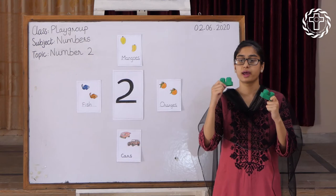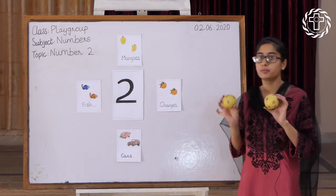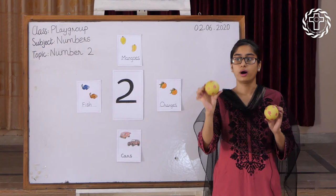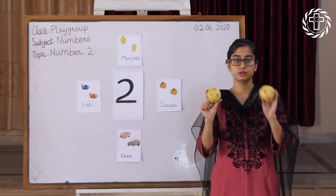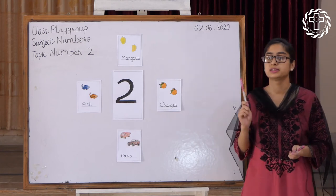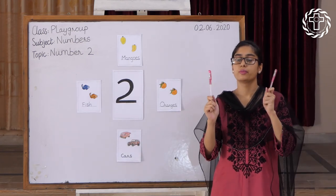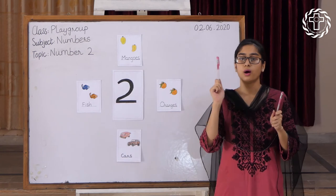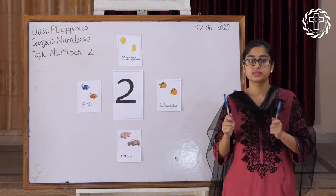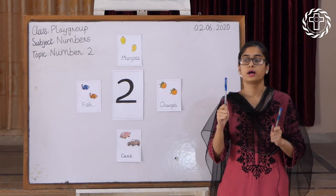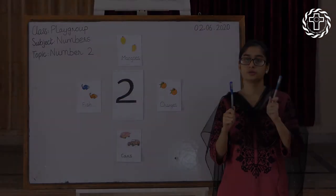How many balls are in my hand? One, two. How many balls are in my hand? One, two. How many balls are in my hand? One, two. How many pink pencils are in my hand? One, two. How many pink pencils are in my hand? One, two. How many blue pencils are in my hand? One, two. How many blue pencils are in my hand? One, two.